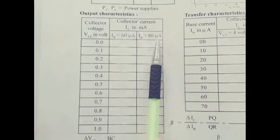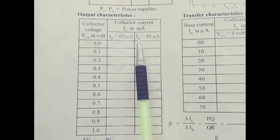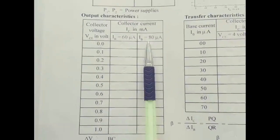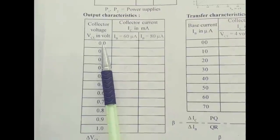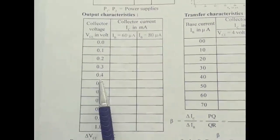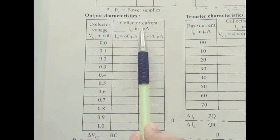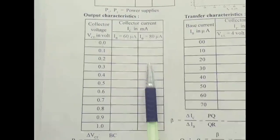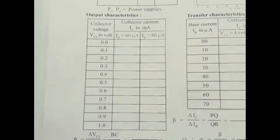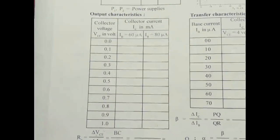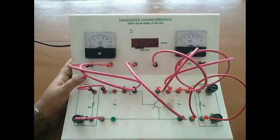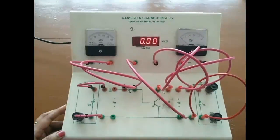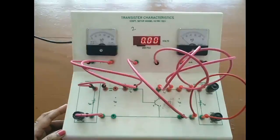Similarly, for the second trial, we fix input current at 80 microamps, and repeat the same process by varying the output voltage in steps of 0.1, 0.2, 0.3 V up to 1 volt, recording the corresponding collector current. The same procedure will be performed on the experimental board. Switch on the power supply and set input current to 60 microamps constant.